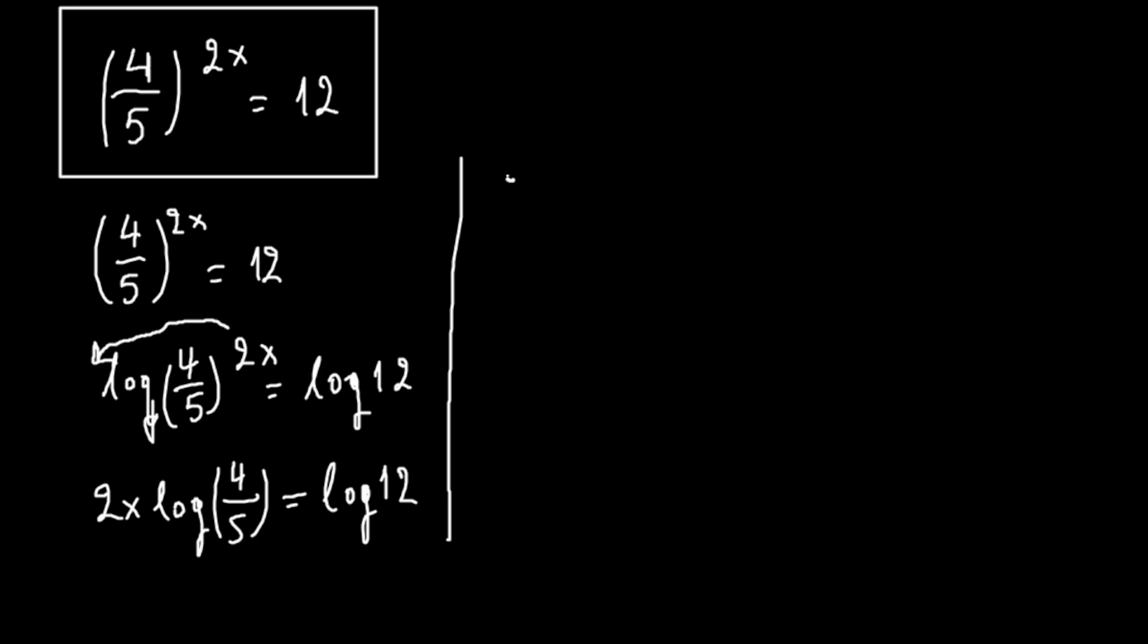So we have 2x log of 4 over 5, divided by 2 times log of 4 over 5, equals log 12 divided by 2 times log of 4 over 5.